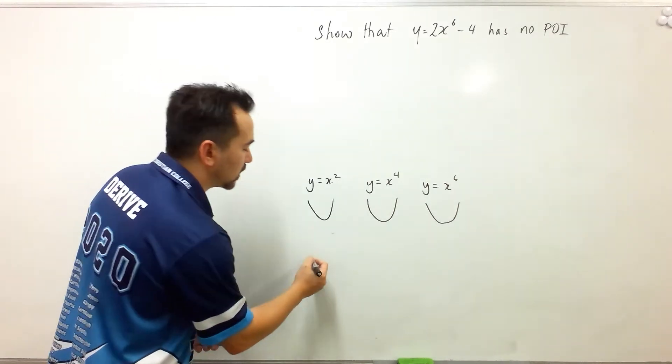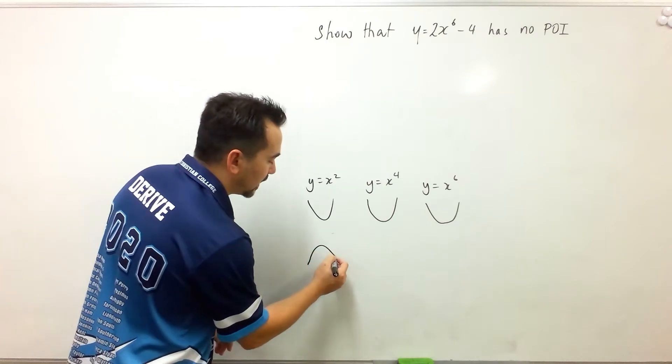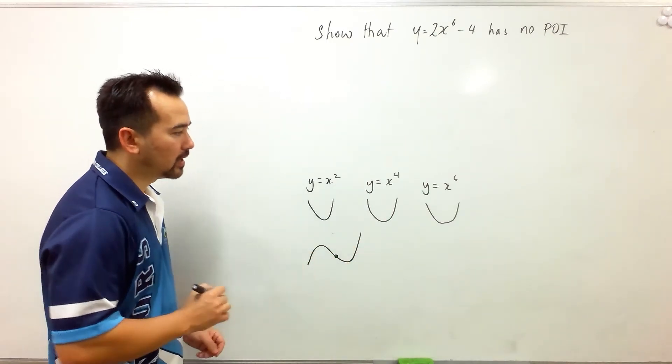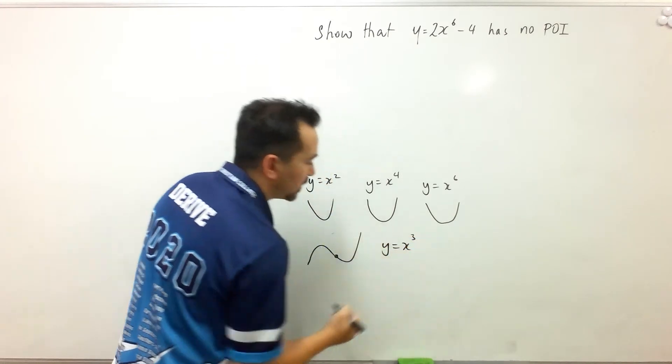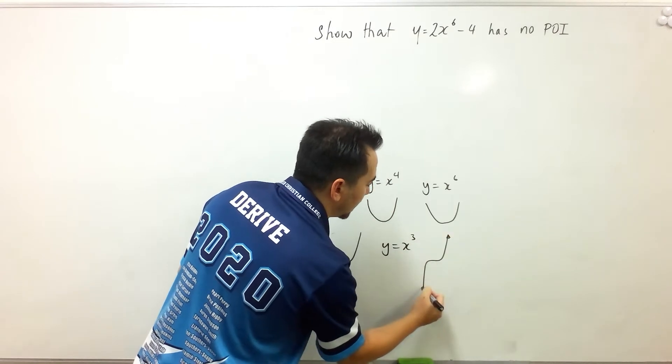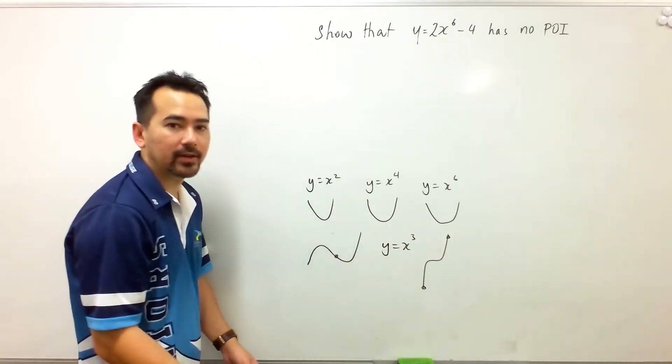For a point of inflection to occur, there needs to be a concave down next to a concave up. So it could look like that. There's another example, x to the power 3, looks like this. And this is another example of concave down followed by concave up.